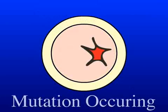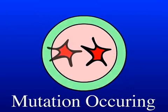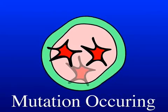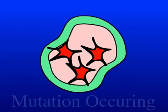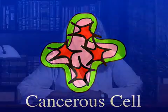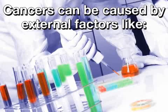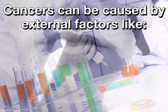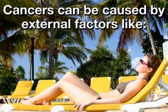Sometimes, however, mutations occur in parts of a cell's DNA. The result can be the formation of harmful, cancerous cells which grow in an uncontrolled manner. This initial mutation can occur from within the body, for example, as a hereditary trait, or as the result of an invading virus. Or the mutation can be the result of external factors such as chemicals, tobacco, or radiation from the sun.